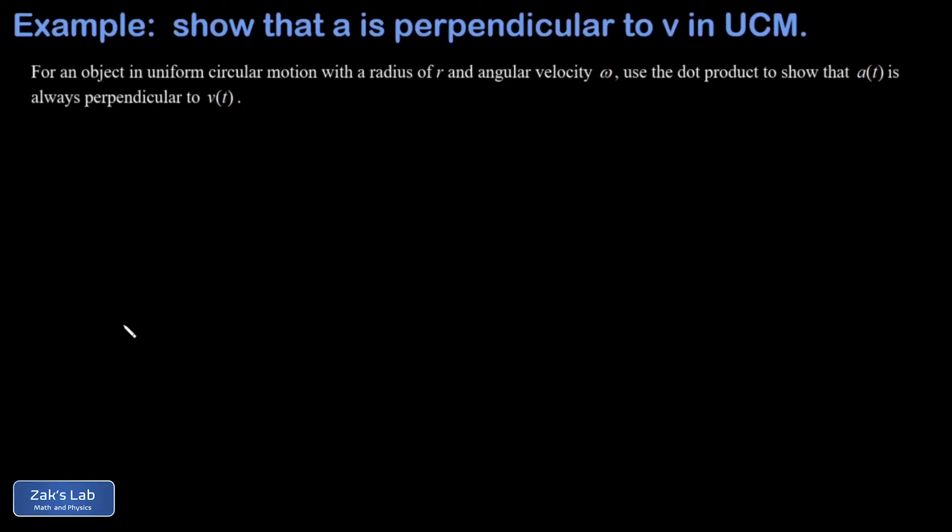In this problem, we're thinking about the formal position, velocity, and acceleration vectors for an object in uniform circular motion.